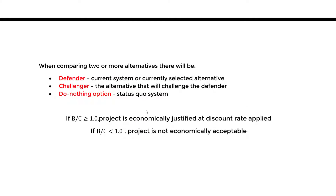Before we begin, I want to define certain terms. When comparing two or more alternatives, there's something called the defender — it's essentially the current system or the currently selected alternative that we're going to compare to the rest. Then we have something called the challenger, which challenges the defender. We compare the defender to the challenger and see which one wins using this benefit-cost analysis. Lastly, we have a do-nothing option, which is also an option we have to consider.